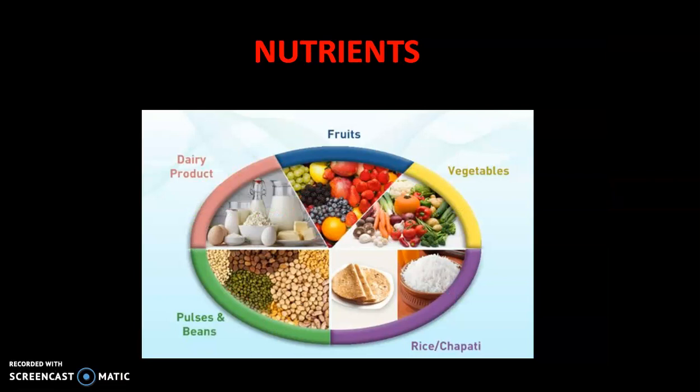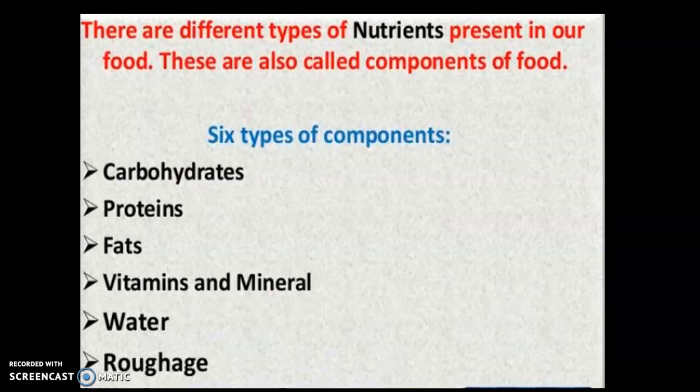Now, what are the different nutrients and their sources? Foods like fruits, vegetables, rice, chapati, pulses, beans, and dairy products are all nutrient-rich. Food is basically a source of nutrients — carbohydrates, fats, vitamins, minerals, and proteins. These nutrients are called the components of food, which is why the chapter is named Components of Food. There are 6 types of components: carbohydrates, proteins, fats, vitamins, minerals, water, and roughage.